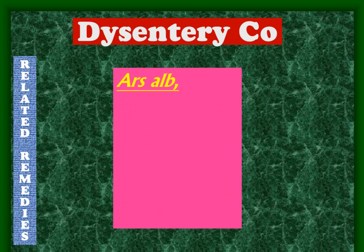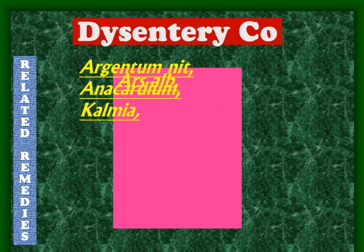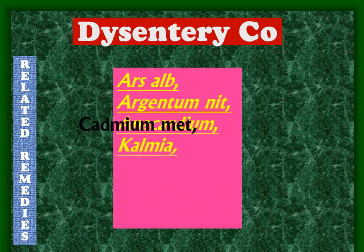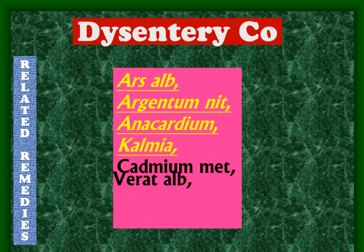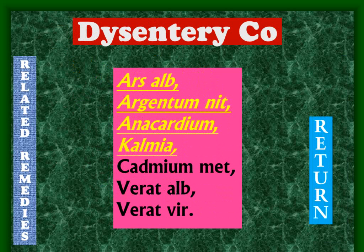The related remedies of Dysentery Co include Arsenic, Argentum nitricum, Anacardium, Cadmium met, Veratrum album, and Veratrum viride — with those written prominently being the more important ones whose picture matches with Dysentery Co.